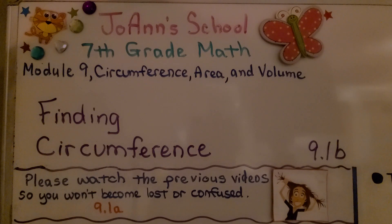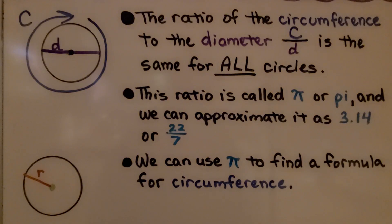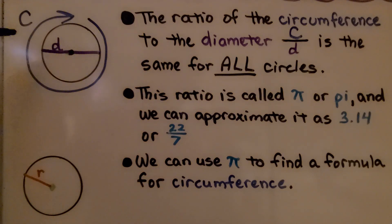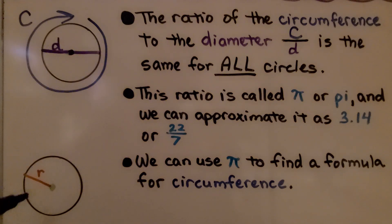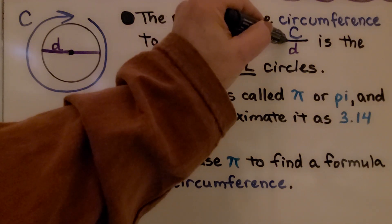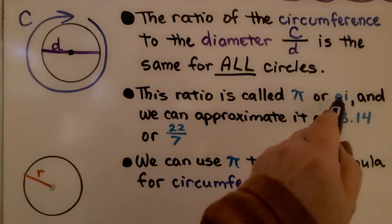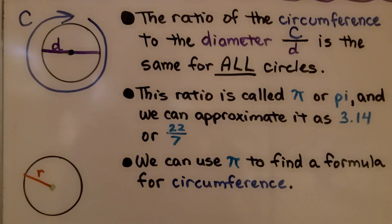9.1b finding circumference. As we discussed in the previous video, the circumference of a circle goes around the circle. The diameter goes from one edge straight across through the center to the other edge, and the radius goes from the center point to an edge of the circle. The ratio of the circumference to the diameter is the same for all circles. This ratio is called pi, and we can approximate it as 3.14 or 22 sevenths.